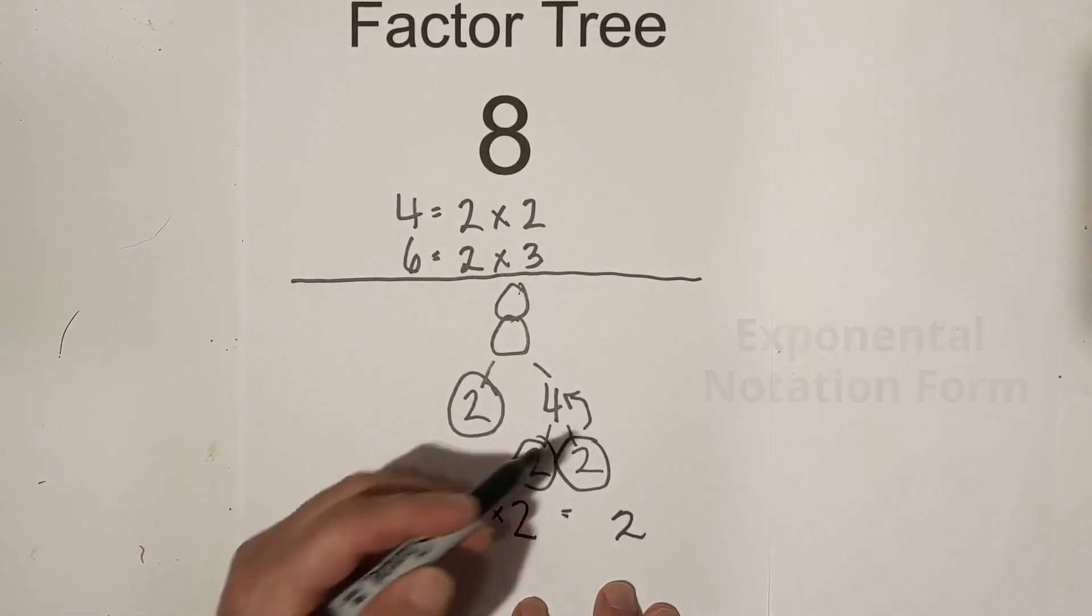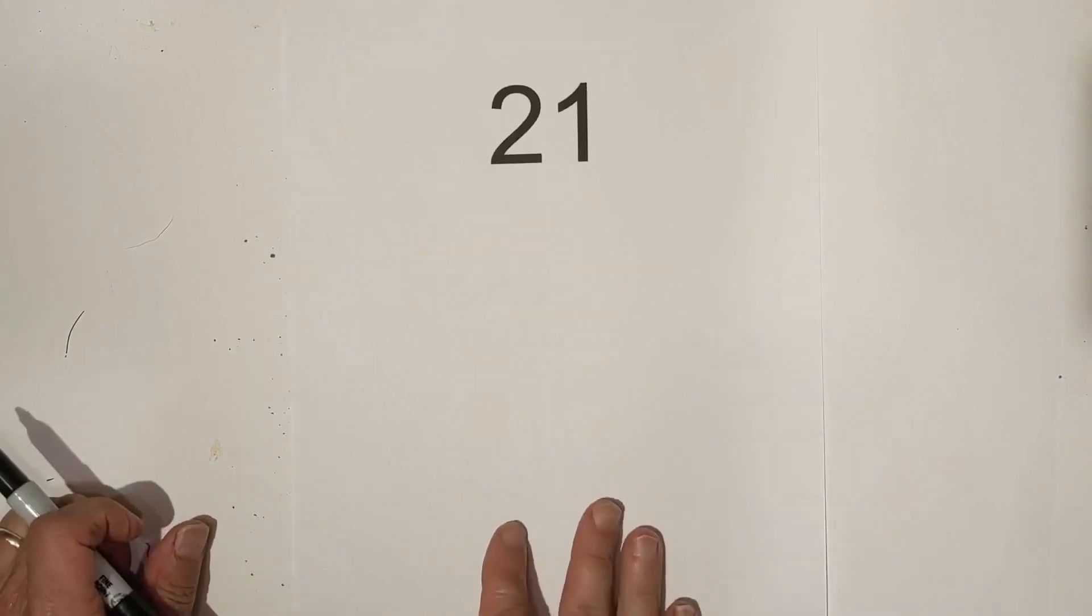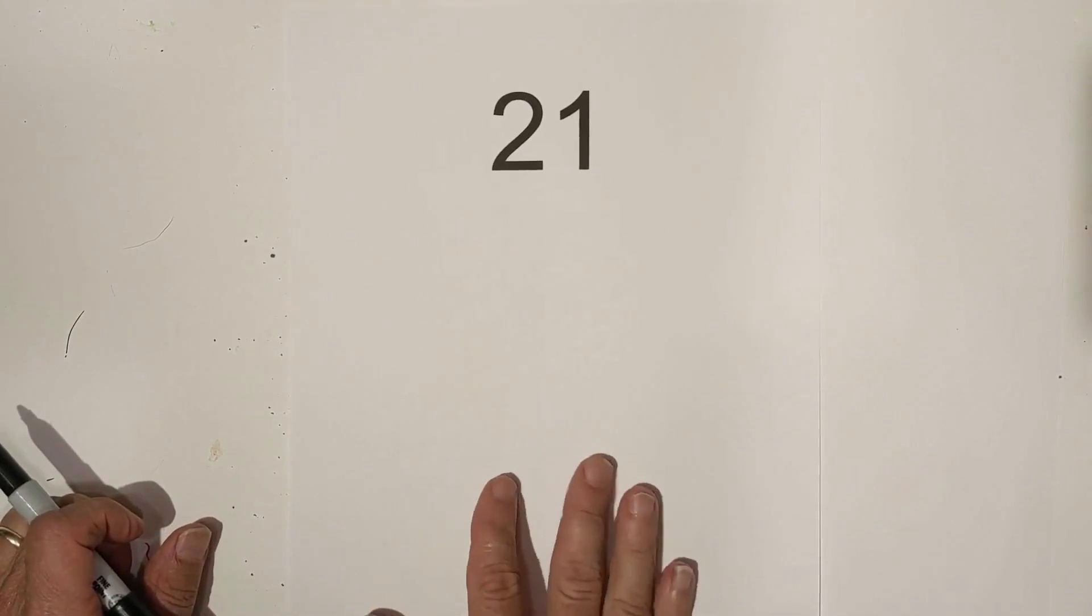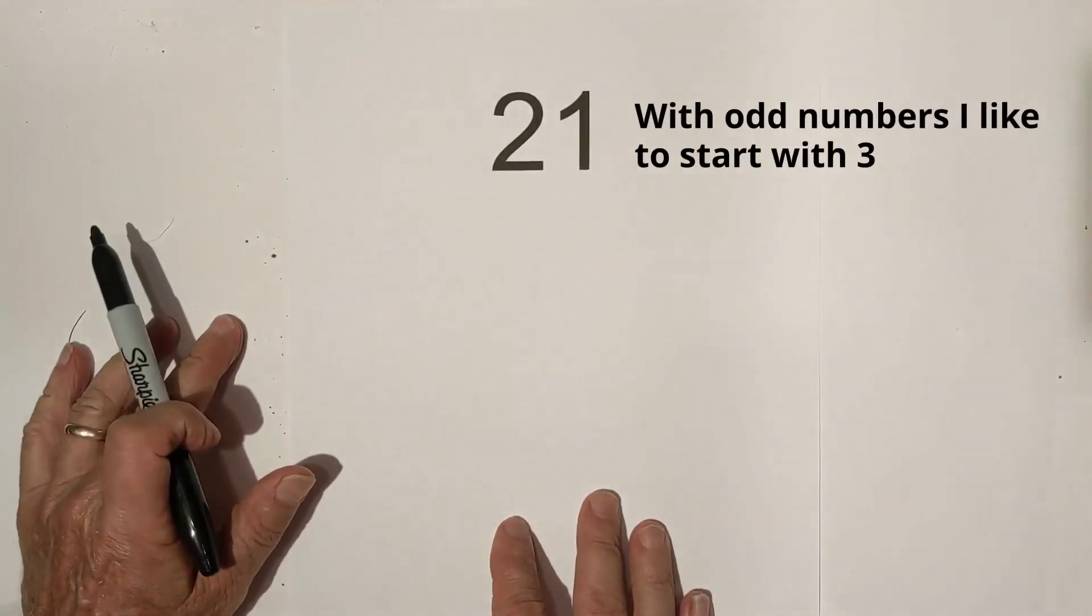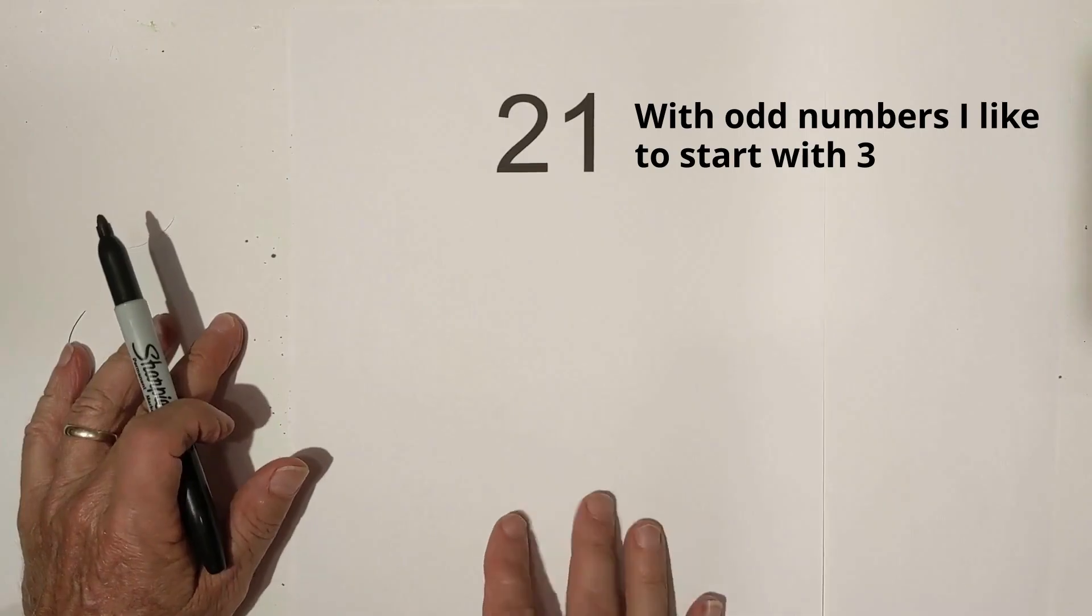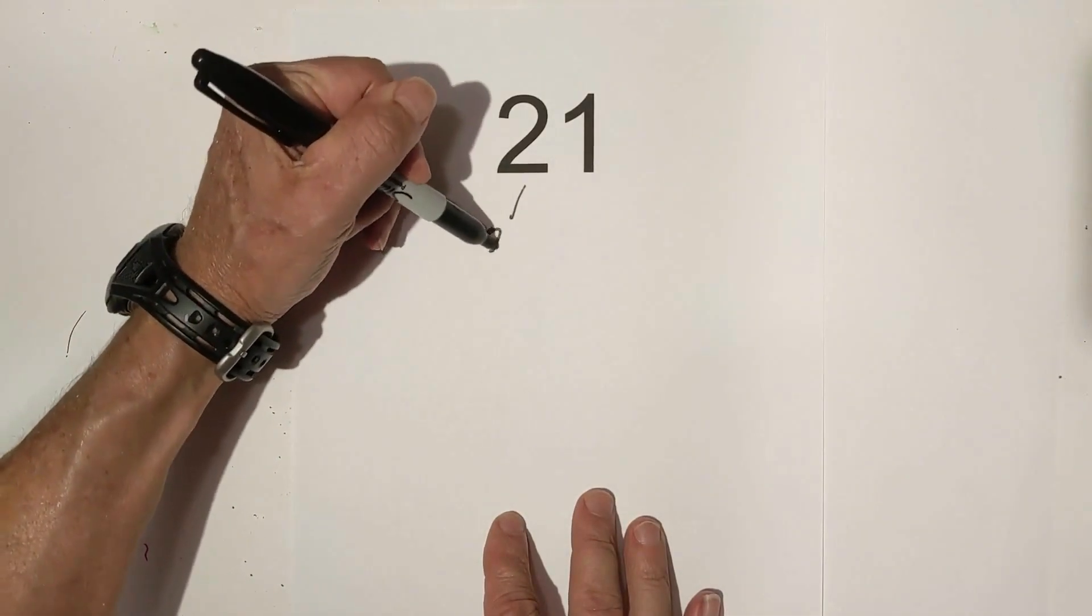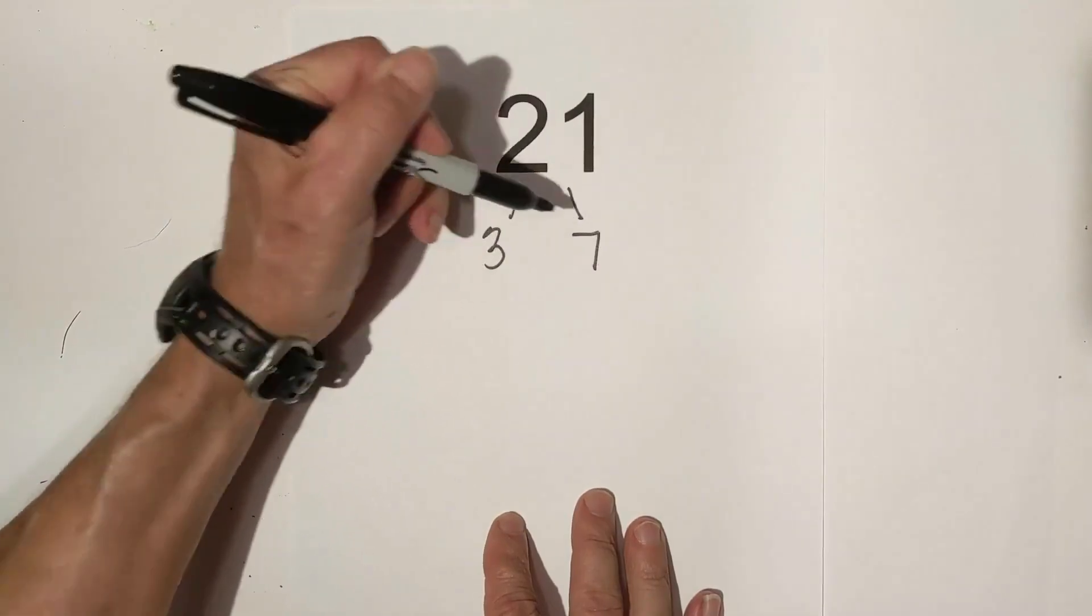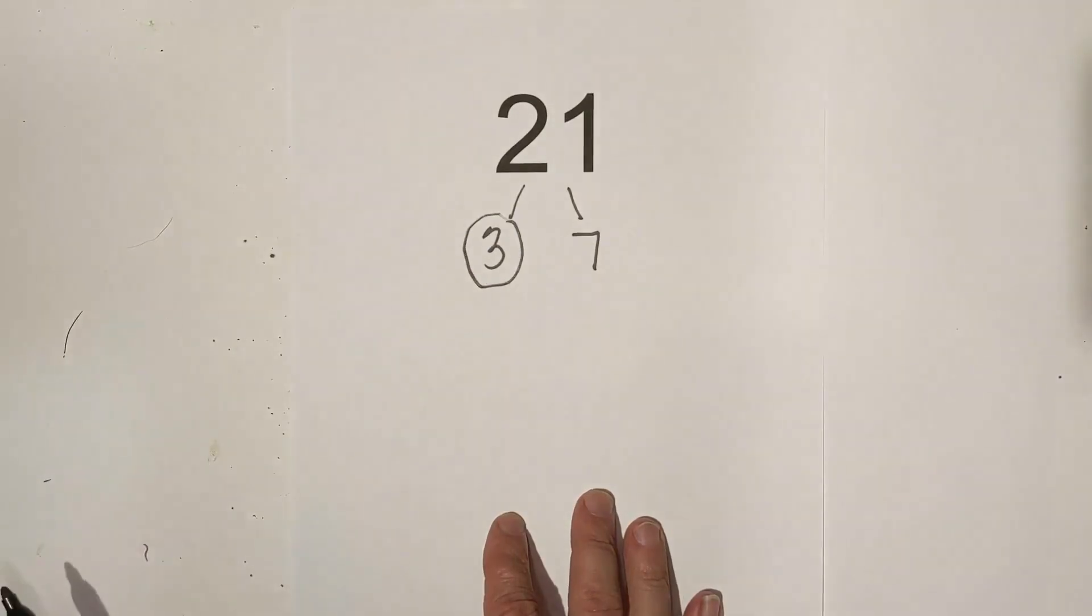So let's try another factor tree. I chose 21 for another tip. Generally, if it's an odd number, then I usually just try three at first. So in this instance, I know that the factors are three times seven equals 21, and I'm gonna circle the three.